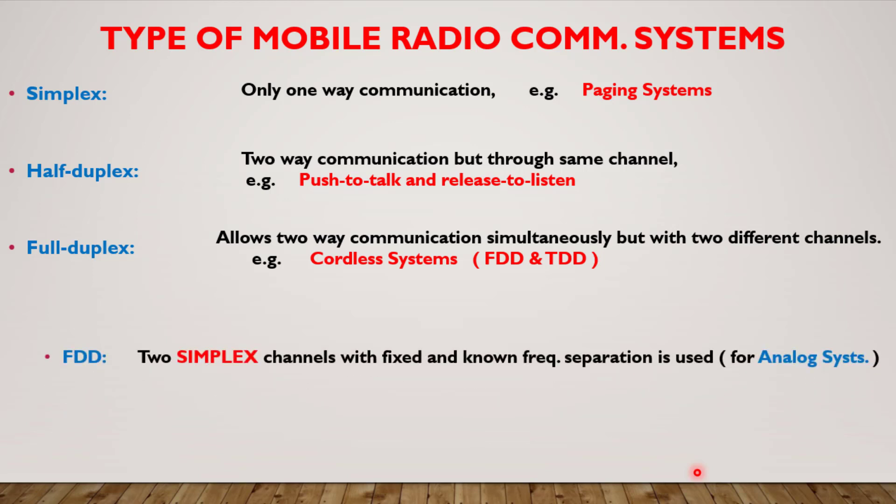In FDD, two simplex channels with a fixed and known frequency separation are used. For uplink and downlink traffic, two different simplex channels are used, separated by a sufficient frequency band. The suggested separation is 5% of the total radio frequency band. FDD-based systems are used for analog communication systems.